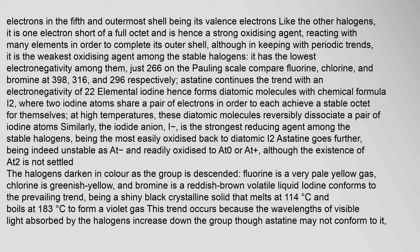At high temperatures, these diatomic molecules reversibly dissociate into a pair of iodine atoms. Similarly, the iodide anion I⁻ is the strongest reducing agent among the stable halogens, being the most easily oxidized back to diatomic I₂. The halogens darken in color as the group is descended: fluorine is a very pale yellow gas, chlorine is greenish yellow, bromine is a reddish-brown volatile liquid, and iodine is a shiny black crystalline solid.